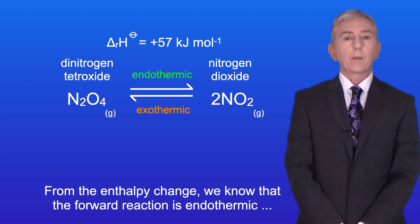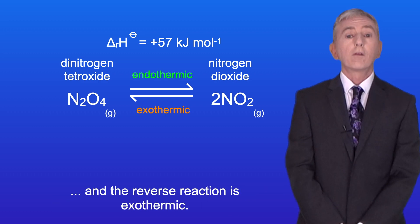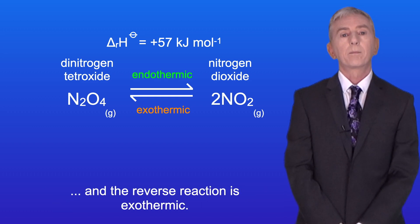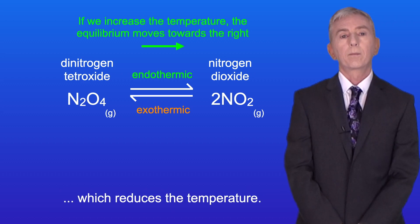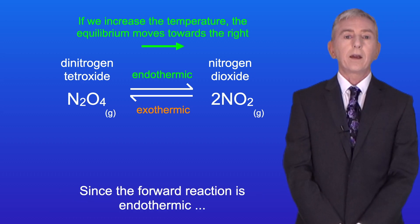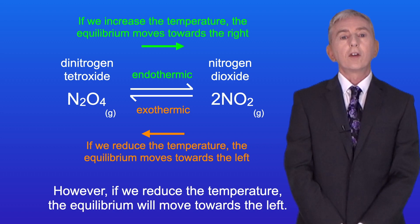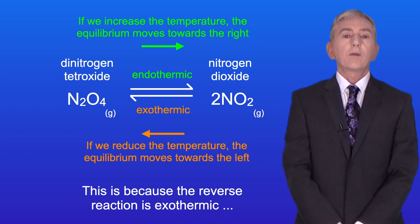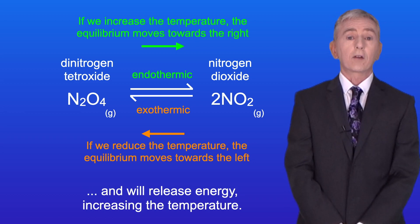From the enthalpy change we know that the forward reaction is endothermic and the reverse reaction is exothermic. If we increase the temperature, the equilibrium will move in the direction which reduces the temperature. Since the forward reaction is endothermic, increasing the temperature will move the equilibrium towards the right. However, if we reduce the temperature, the equilibrium will move towards the left, because the reverse reaction is exothermic and will release energy, increasing the temperature.